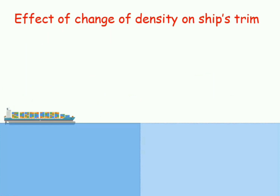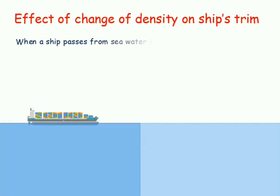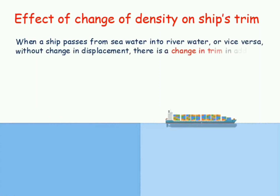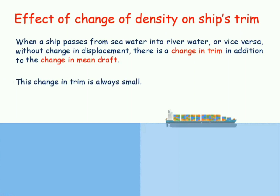It is clear that there occurs a change in the mean draft because of a change in density. But what about trim? Whenever a ship moves from water of one density to another, without there being a change in its displacement, there may occur a change in trim along with a change in the mean draft. However, this change in trim is quite small. In this session, we will understand how exactly that takes place.